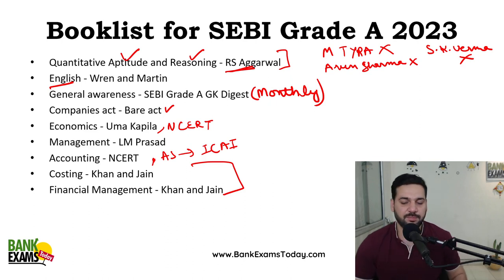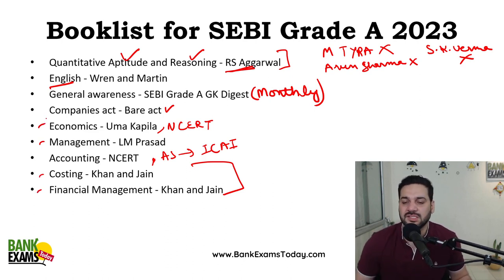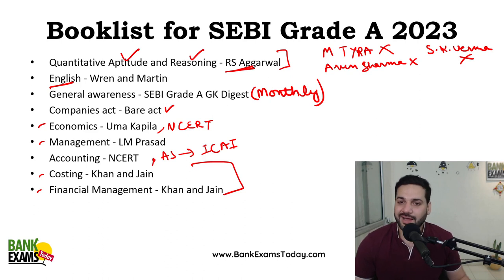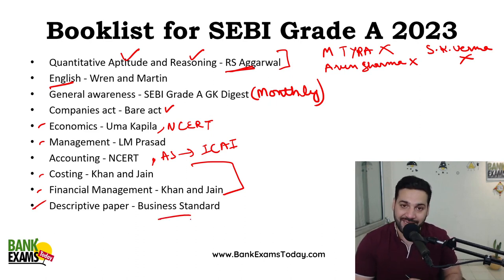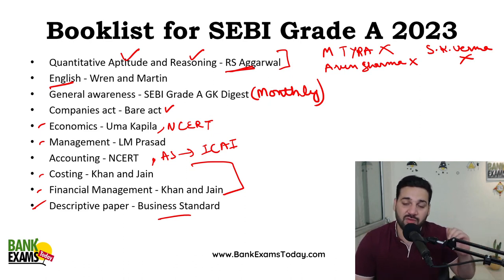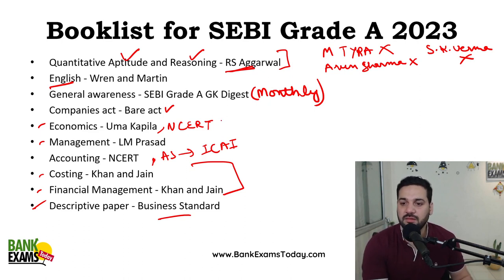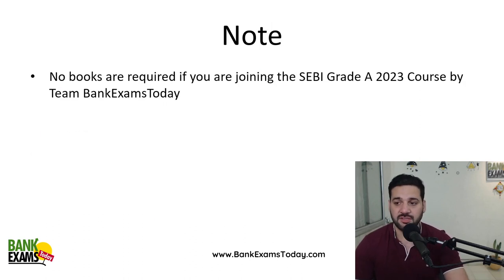One thing I want to tell you students — for Paper 2, all these books — management, costing, financial management, even economics — they are kind of overkill. You are not supposed to go through the entire books. That is why there are courses. For descriptive paper, Business Standard is there and you are supposed to write your essays and get them evaluated. That is why you need to buy a course. If you join the SEBI Grade A 2023 course by Team Bank Exams Today, no books are required at all.